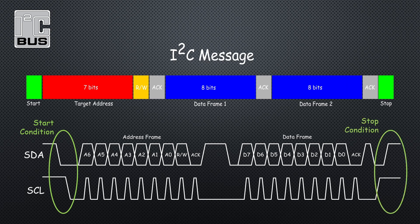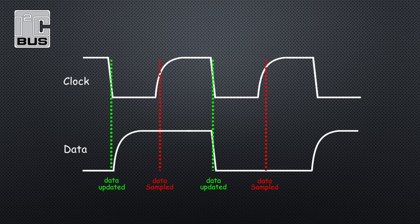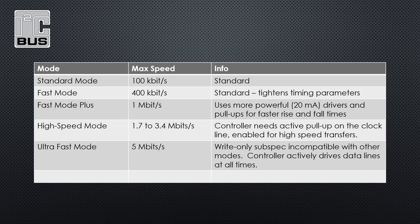The stop condition is indicated by the master letting the data line go high after the clock line. The bus has then been released. When we look at exactly how data is clocked through, we find that the data signal is updated on the falling edge of a clock signal and then sampled on the rising edge of the next clock pulse. This gives the data some settling time before it's sampled.